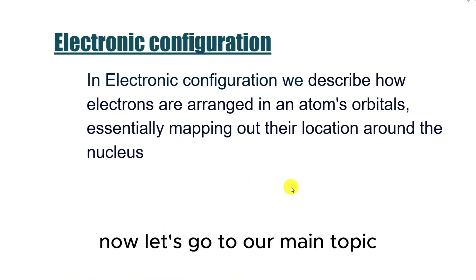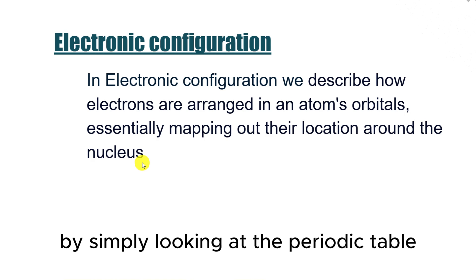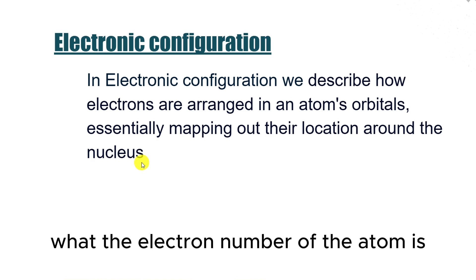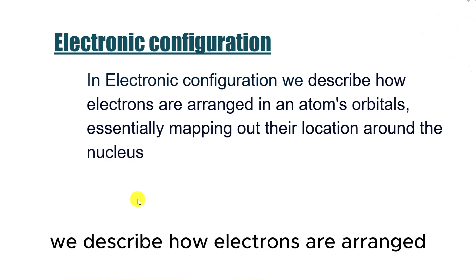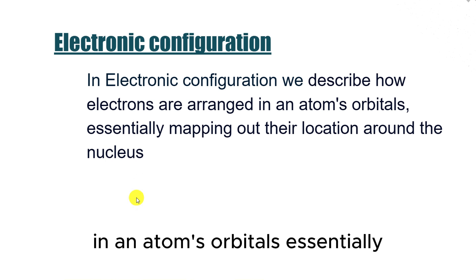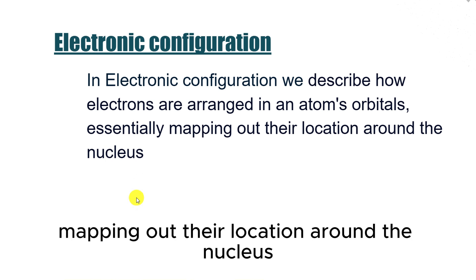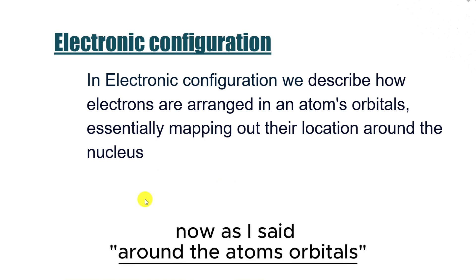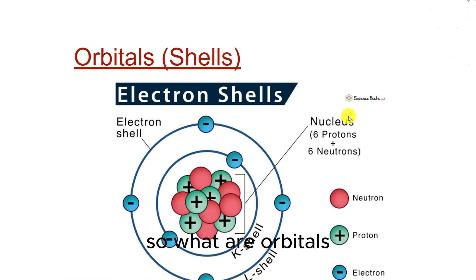Now, let's go to our main topic, electronic configuration. Now you must know how to find out by simply looking at the periodic table what the electron number of that atom is. In electronic configuration, we describe how electrons are arranged in an atom's orbitals, essentially mapping out their location around the nucleus. As I said, around the atom's orbitals. So what are orbitals? In year 9, we also call them shells.